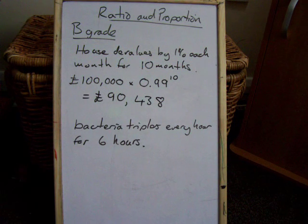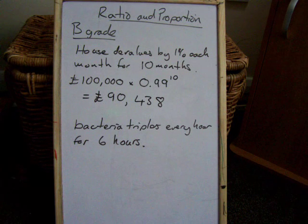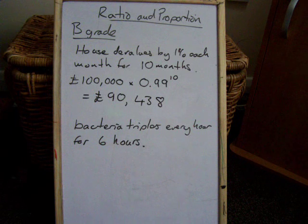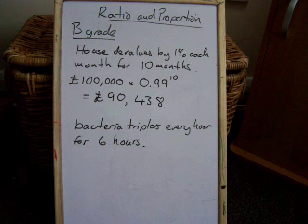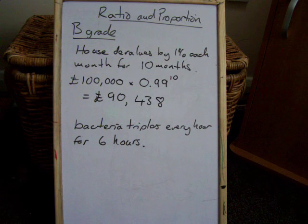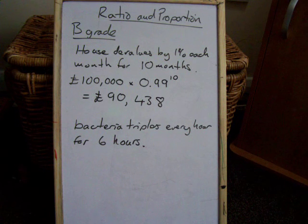Every time you go down by a percent, the amount the house costs is a little bit less, so the next percent you go down will take a little bit less off. That's how you do the multipliers for percentages. If it was increasing by 5% each month, then that would be 1.05 to the power of however many months you've got.